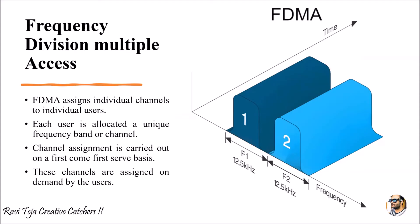Welcome to the course of satellite communications. In today's class we are going to learn about Frequency Division Multiple Access (FDMA). As the name indicates, FDMA gives access to multiple users based on the division of frequency. Each user is assigned an individual channel, and each user is allocated a unique frequency band or channel.